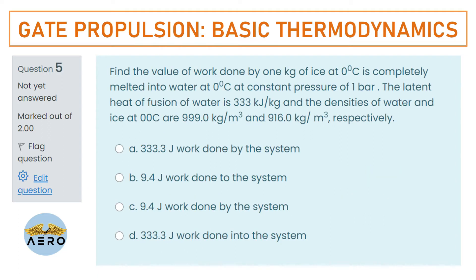Find the value of work done when 1 kg of ice at 0°C is completely melted into water at 0°C at constant pressure of 1 bar. The latent heat of fusion of water is 333 kJ/kg, and the densities of water and ice at 0°C are 999 kg/m³ and 916 kg/m³ respectively.